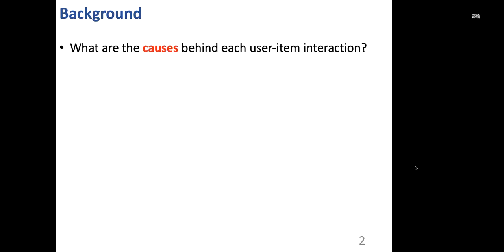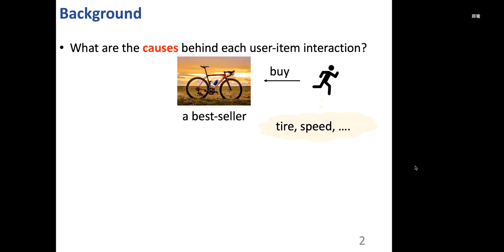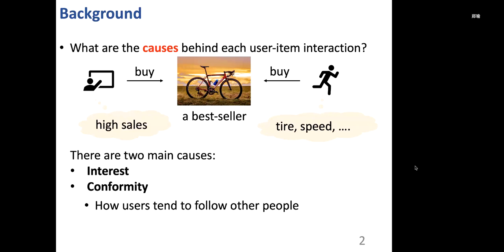In recommender systems, what we observe are user-item interactions. However, there are causes behind each interaction. For example, here is a bicycle in e-commerce recommendation, and it is a bestseller. A sports lover may buy the bicycle because of his unique taste on certain characteristics, while an office staff also buys this bicycle simply because of its high sales. The two users buy the same bicycle with different causes, and in this paper, we focus on the two main causes: interest and conformity.